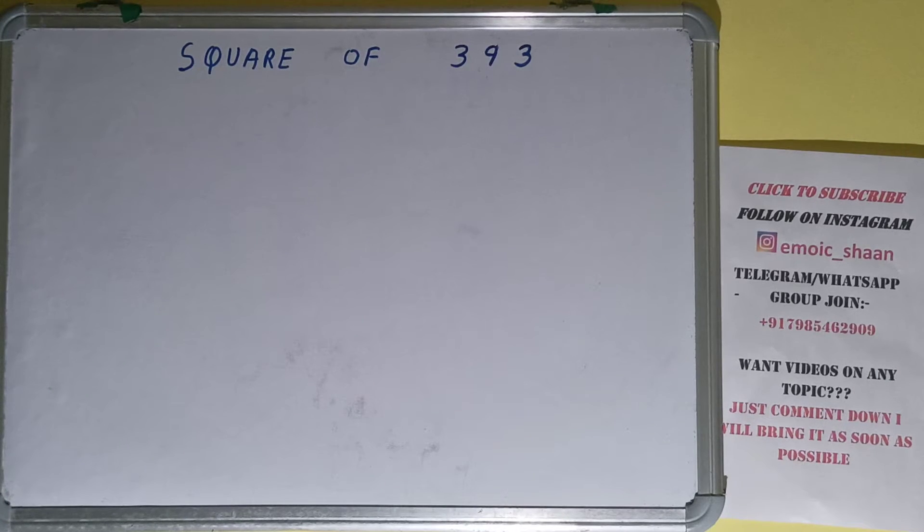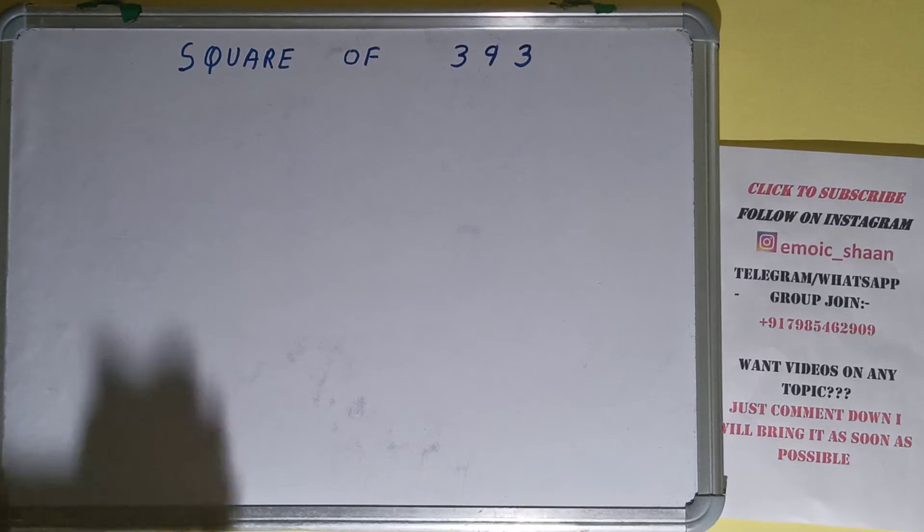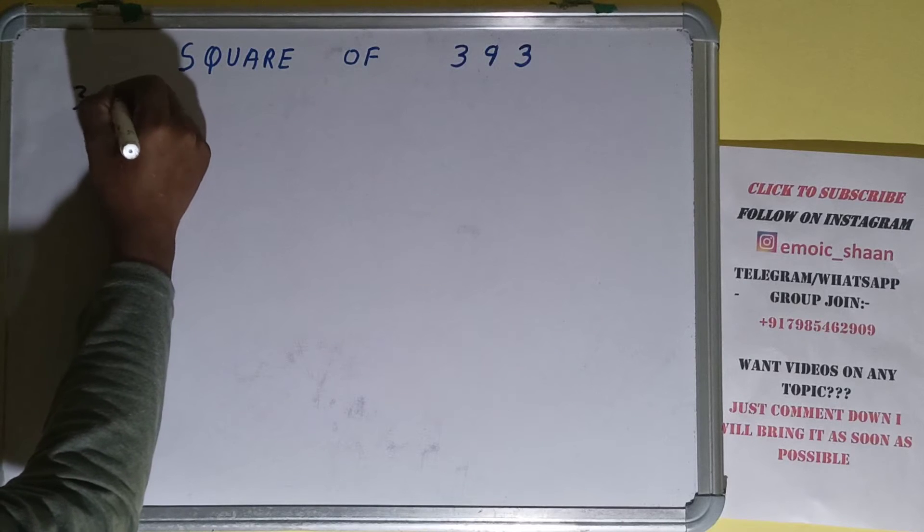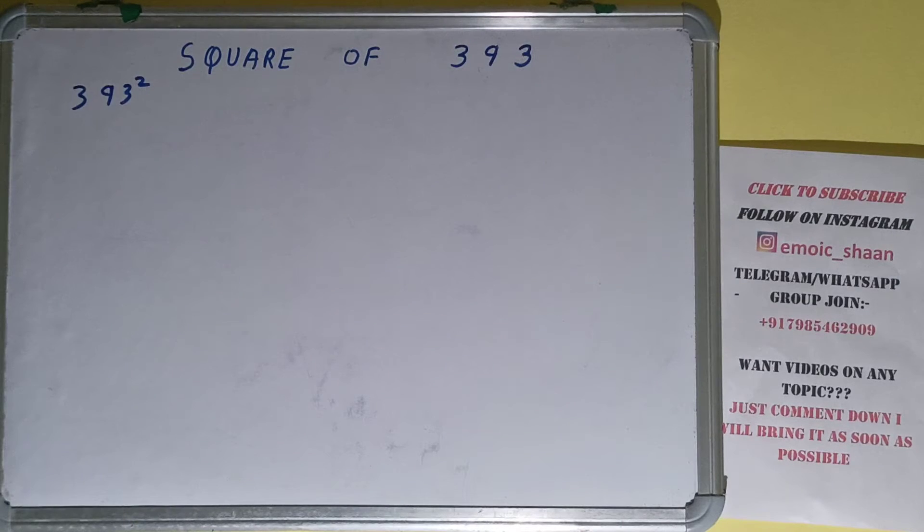Hello friends, in this video I'll be helping you with the square of the number 393. Before solving this, let me tell you square of 393 can also be written as 393 raised to the power 2. Moving on to the solution, square basically means multiplying the number by itself. To find the square of 393, we need to multiply it by itself, 393 times 393, and do the multiplication.